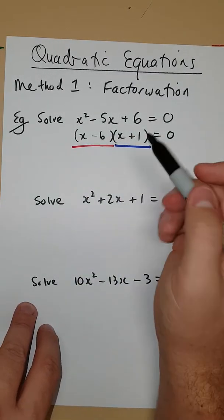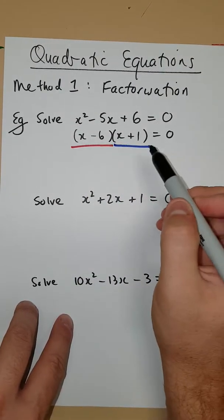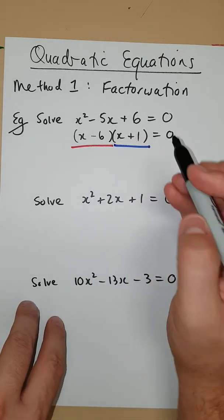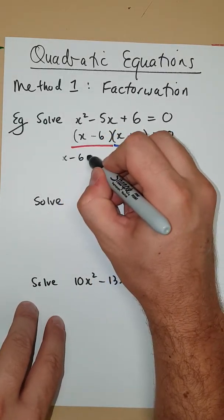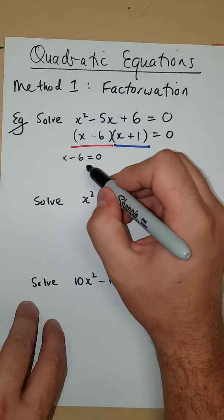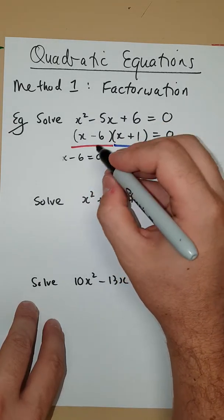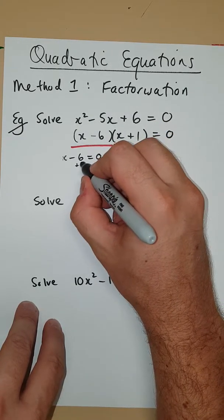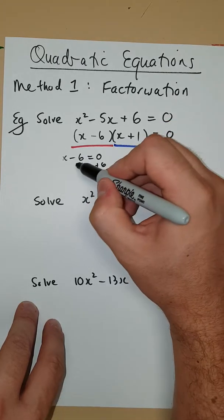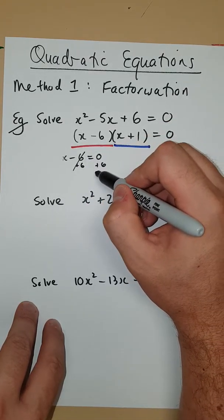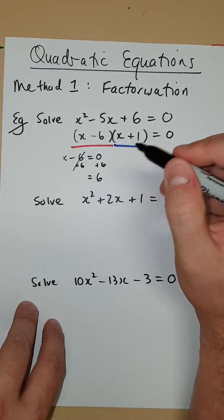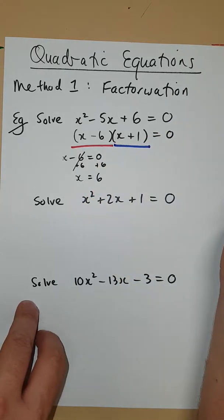Alright, so let's go ahead and write some matching equations here. So, if x minus 6 has to be 0, then this is going to result in a solution of 6. Alright, by adding 6 to both sides, this cancels, the right-hand side becomes 6, and we have that x is equal to 6.